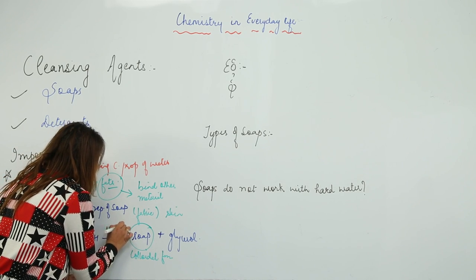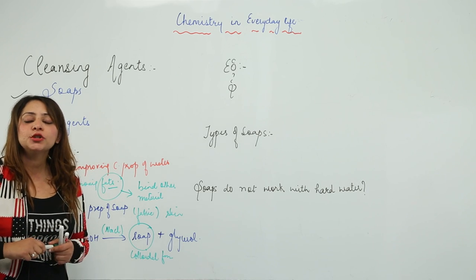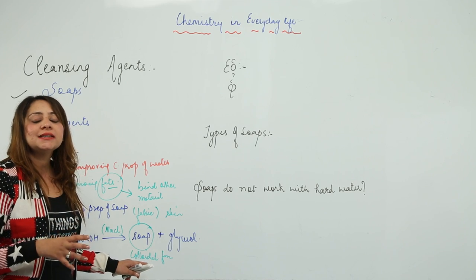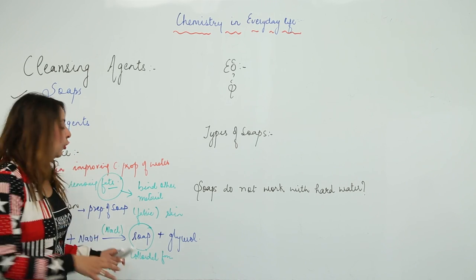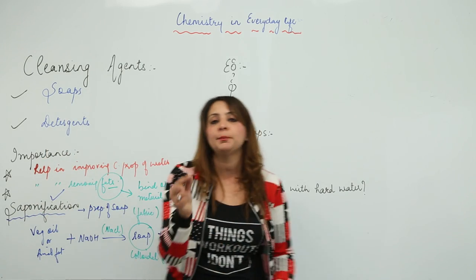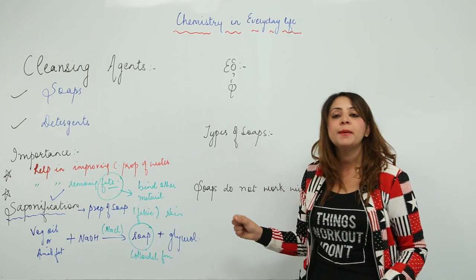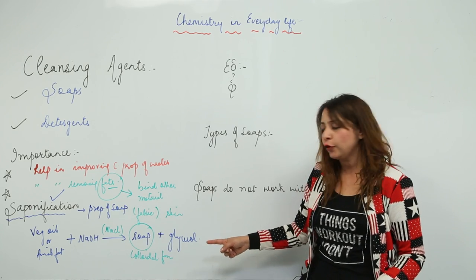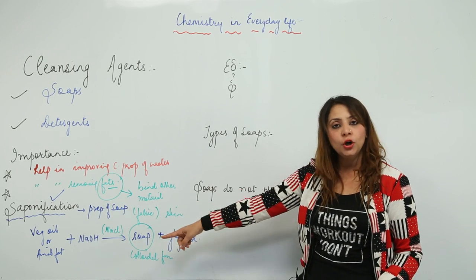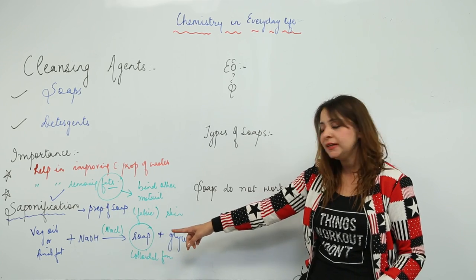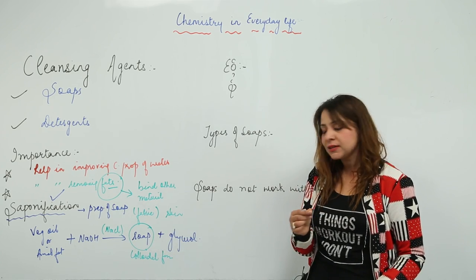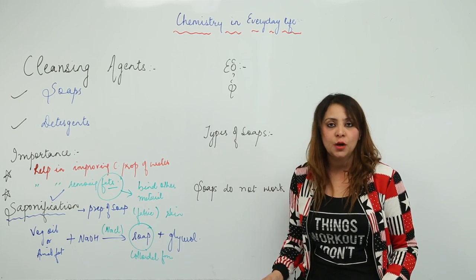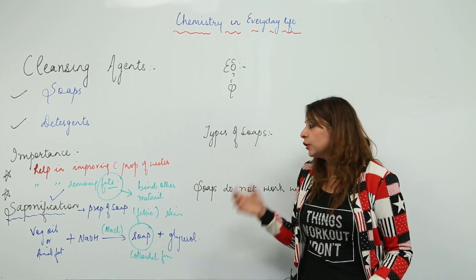In order to precipitate the soap from the mixture of soap and glycerol, we add a pinch of salt (NaCl) to it. This pinch of salt helps in precipitating the soap out of the colloidal mixture. So in saponification: vegetable oil or animal fat is added to sodium hydroxide, a pinch of NaCl is required, and you get soap and glycerol. Due to NaCl, the soap gets precipitated out.